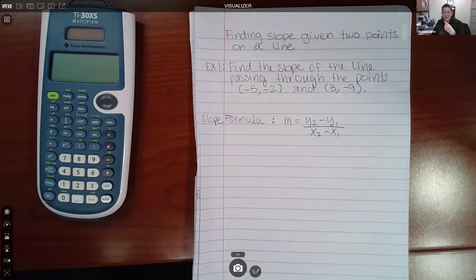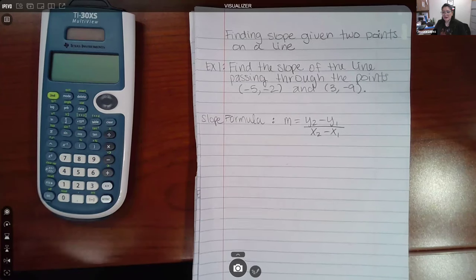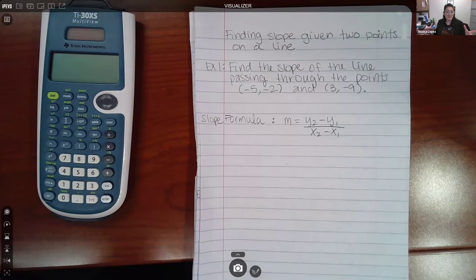In this topic, we will talk about finding slope given two points on a line. Most of the problems will look exactly like this: find the slope of the line passing through the points, and they'll give you two sets of points.